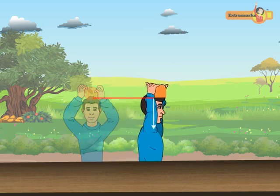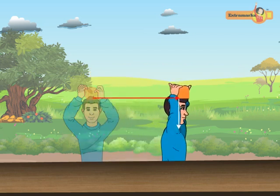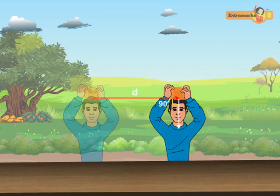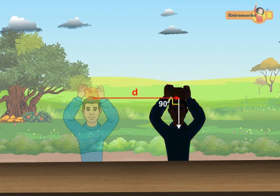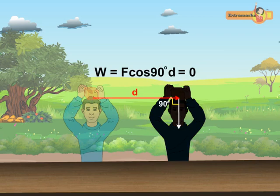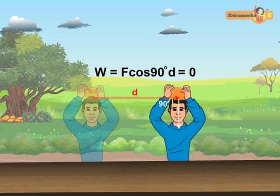The boy now moves a horizontal distance D with the block on his head. Since the angle between the weight of the block and the horizontal displacement is 90 degrees, the work done in this case is 0. Hence, even though the boy has expended energy and produced displacement, he has not done any work in moving the block along the horizontal direction.